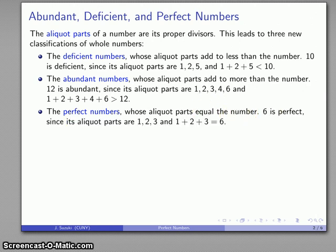We find that 6 is a perfect number because if I look at the aliquot parts of 6, they are 1, 2, and 3, and if I add 1 plus 2 plus 3, I get 6.